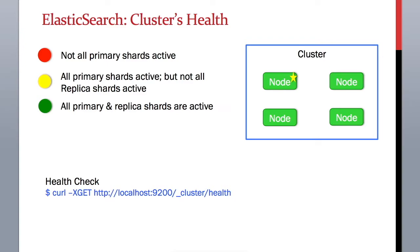In the response it returns three different statuses: red, green, and yellow. Red means that all your primary shards are not active, which means that your requests will fail. Your cluster is in a failure state, there are no backups, and you need to investigate.